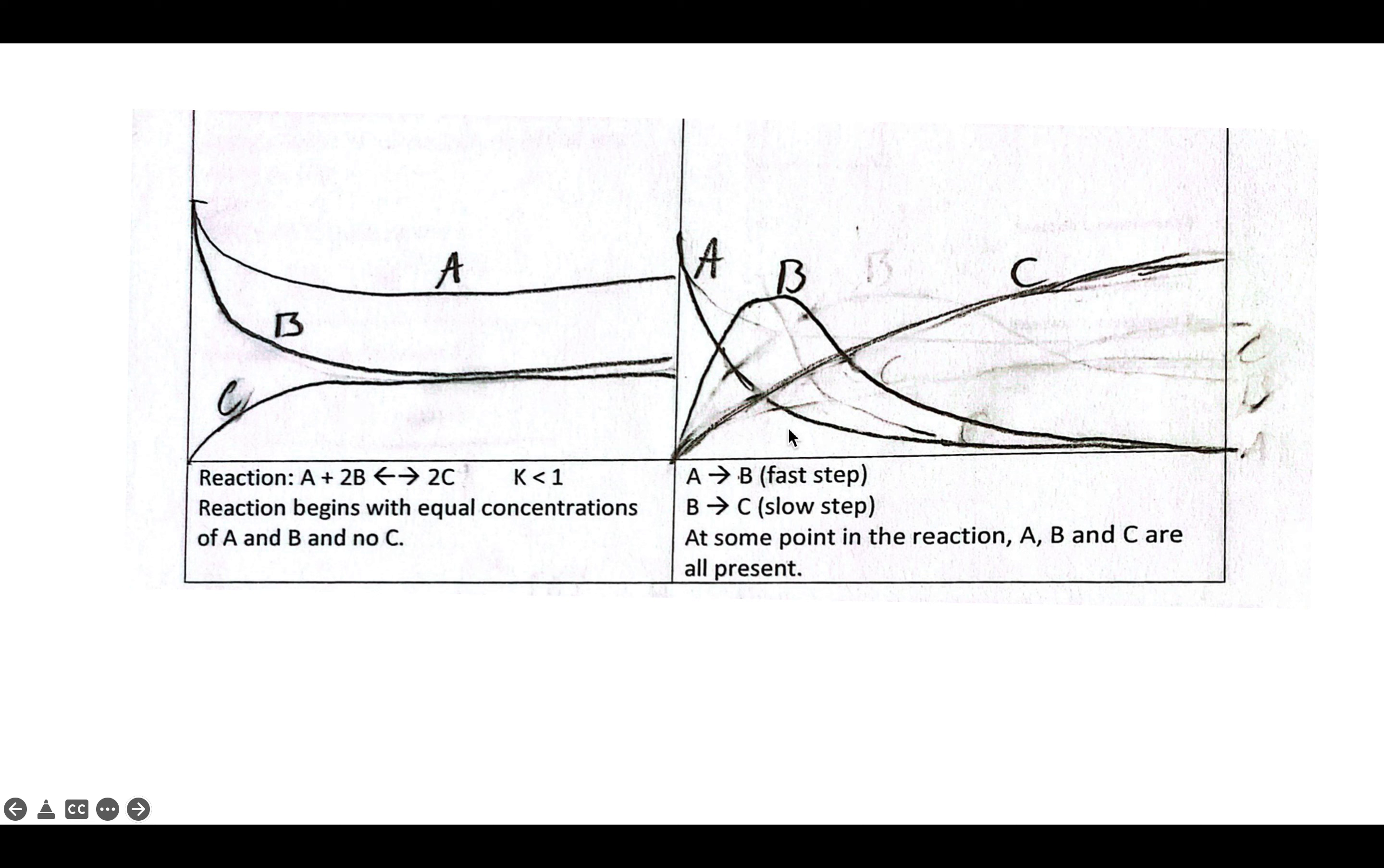So I end up favoring the reactants relative to the product. Within the second one here, we have A going to B quickly. So I have A diminishing, B increasing. It's an intermediate that then will itself diminish, and C will rise in from there. These were the kinds of features that I was looking for.